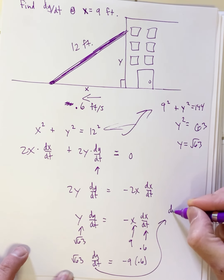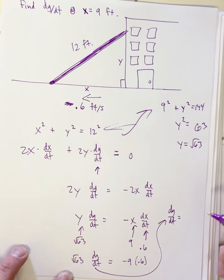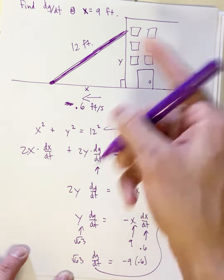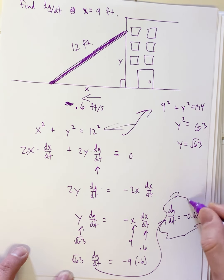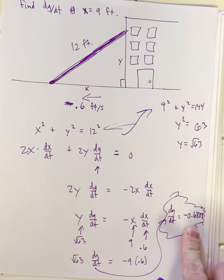That'll tell us that dy/dt, the goal, is negative 0.6803. That's just my made-up answer for my made-up problem. I don't know how they want you to round.